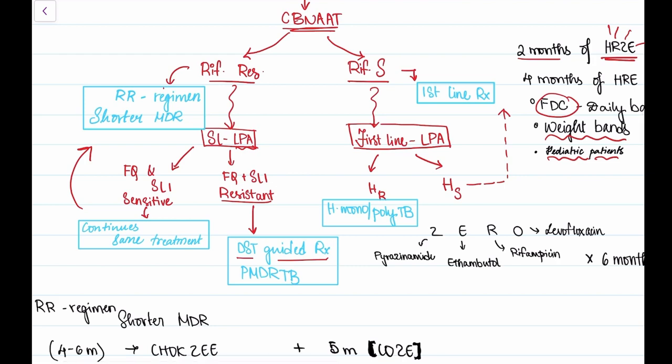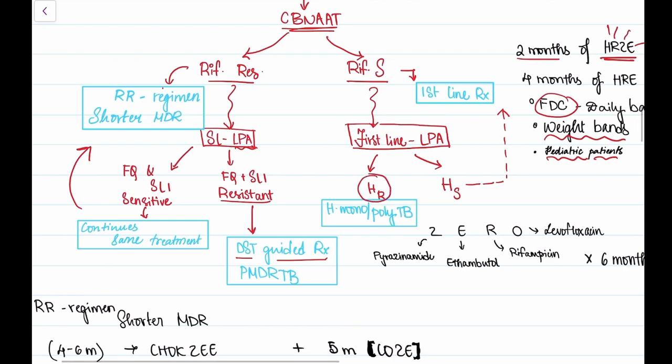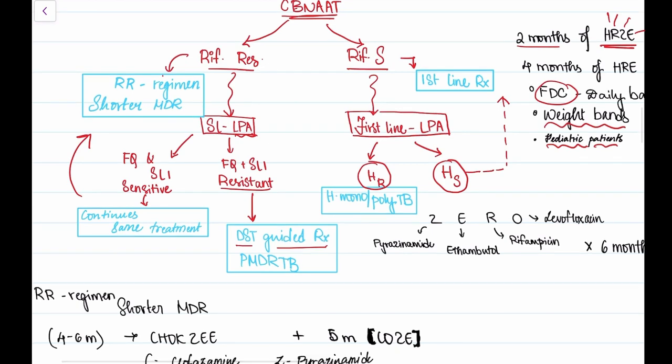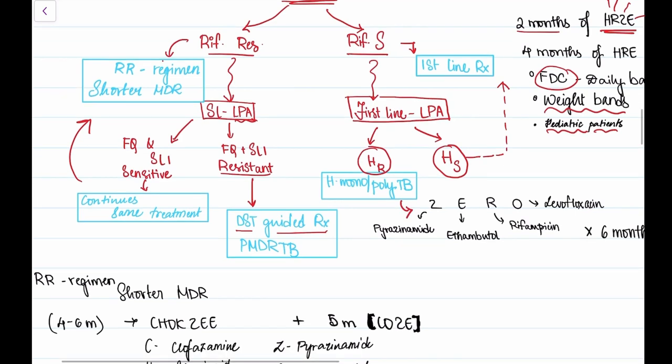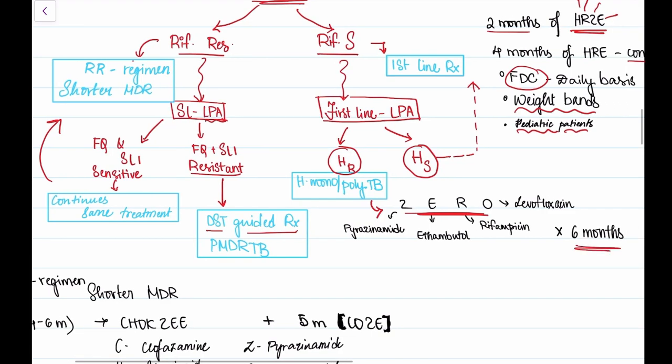If it is rifampicin sensitive, we again do a first line line probe assay to see if it's isoniazid resistant or isoniazid sensitive. If it is resistant, we give an H-mono resistant poly-TB regimen that can be remembered with the mnemonic ZERO, where Z stands for pyrazinamide, E for ethambutol, R for rifampicin, O for levofloxacin. This is given for six months.